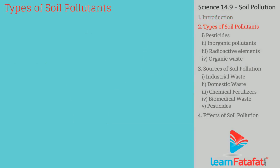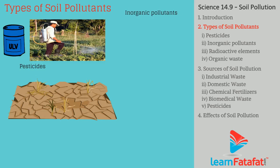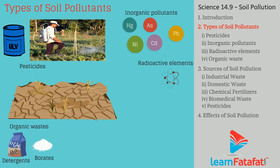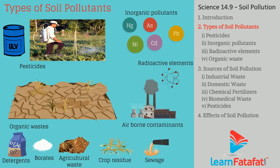Types of Soil Pollutants. Various soil pollutants are: pesticides — chemicals used for pest control; inorganic pollutants such as Hg, As, Ni, Cd, Pb; radioactive elements; organic waste such as detergents, borates, agricultural waste, crop residue, sewage; and airborne contaminants like gaseous emissions from industries.